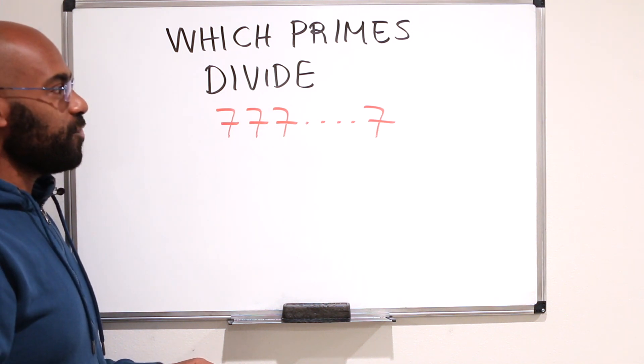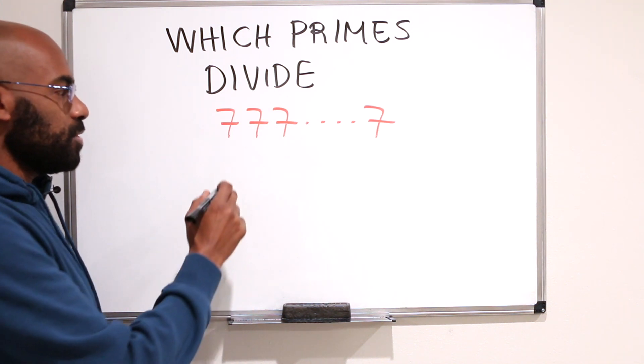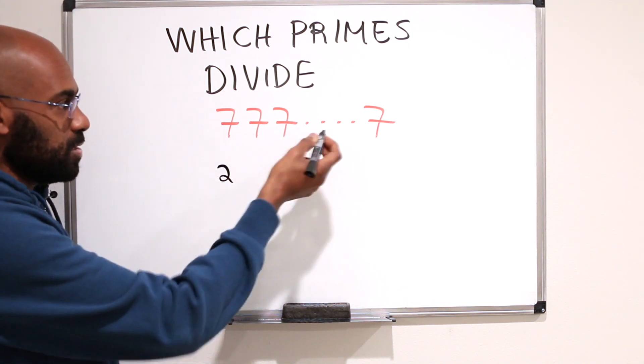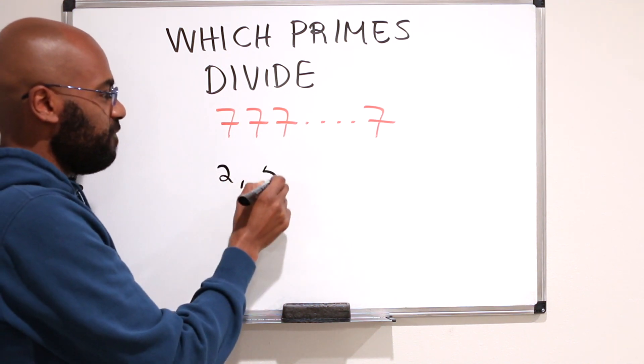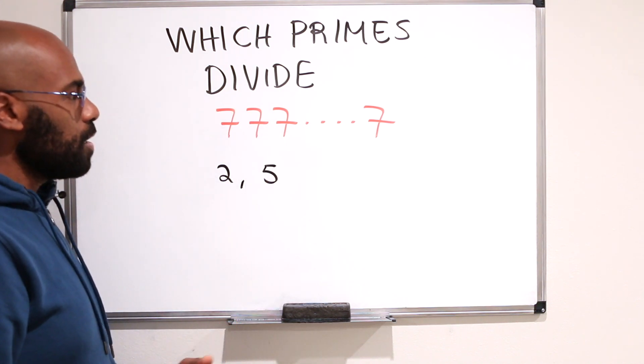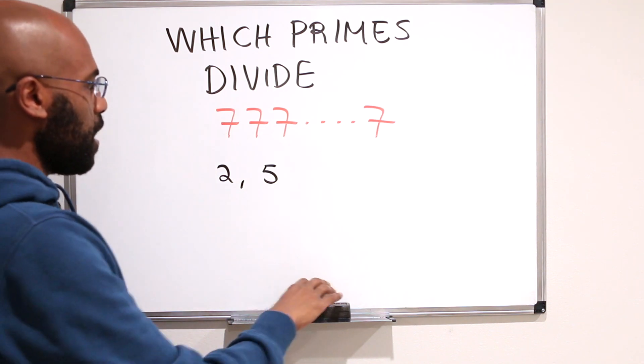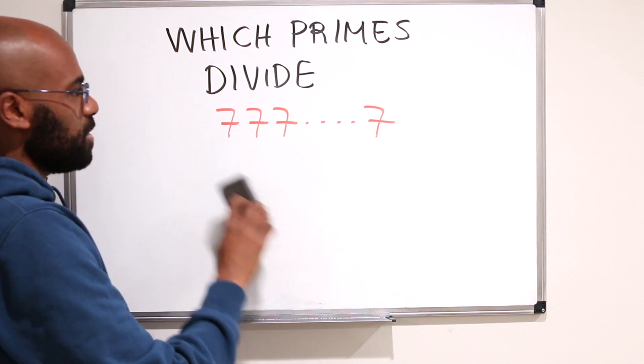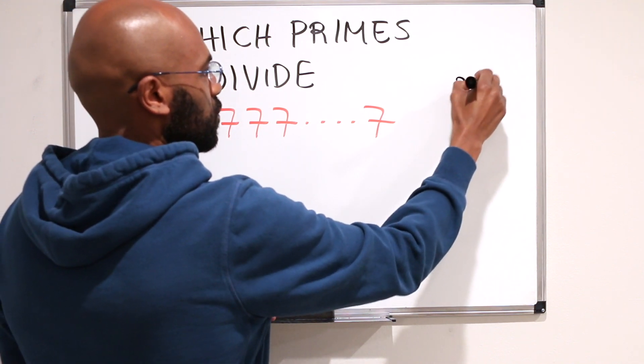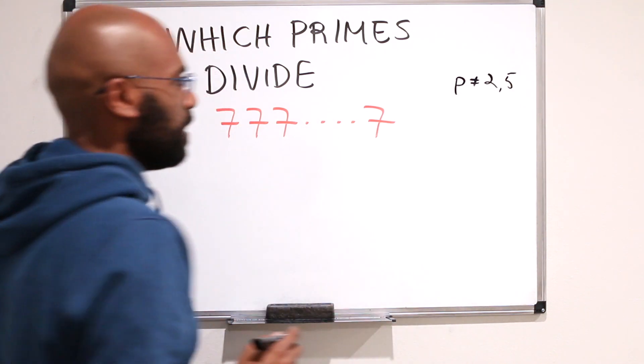So first, let's rule out a few possibilities. The number 2 doesn't divide this because 2 is even and this is an odd number. And 5 doesn't divide this either. Multiples of 5 end with either a 5 or a 0. So what about other primes? Let's pick a prime p that's not equal to 2 or 5 and analyze the situation.